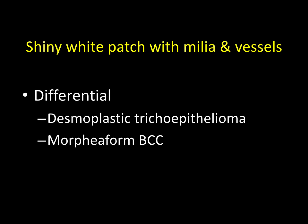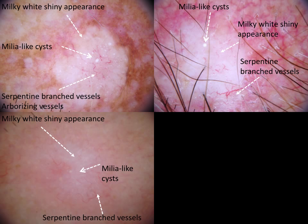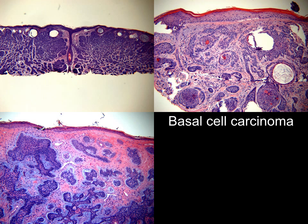So what is the differential for lesions that reveal a shiny white patch with milia cysts and vessels? It is between a desmoplastic trichoepithelioma and morpheaform basal cell carcinoma. Here are three lesions revealing a shiny white background with irregular vessels, some of which are arborizing, and multiple milia cysts. In all three cases, the biopsies revealed basal cell carcinoma of the morpheaform type.